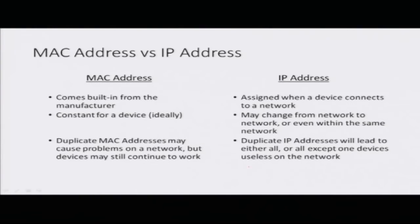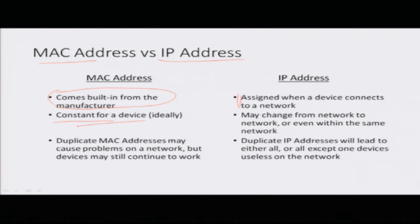Last time we had a look at MAC addresses and IP addresses. MAC addresses are something that comes inbuilt from the manufacturer, and IP addresses are something that are assigned by a system when a device connects to the network. The MAC address is a constant for a device — it ideally should never change, however it can be spoofed at the software level. IP addresses may change from network to network, and even on the same network upon reconnection, the IP address may change.